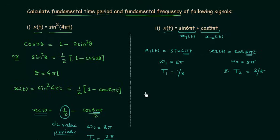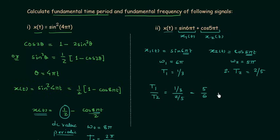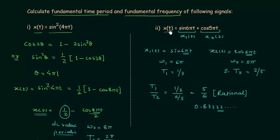Now step 2: we find the ratio T₁/T₂ = (1/3)/(2/5) = 5/6. In step 3 we analyze whether this ratio is rational or irrational. When you divide 5 by 6 you get 0.8333... — repeating decimals — so 5/6 is a rational number. Since the ratio is rational, the composite signal x(t) is periodic.